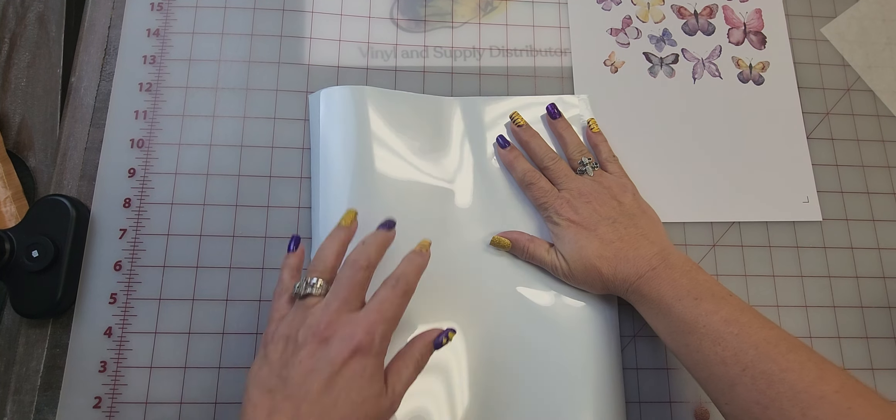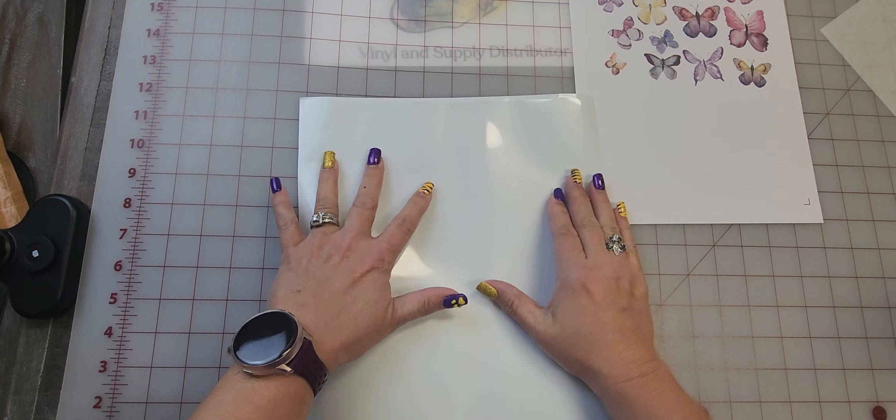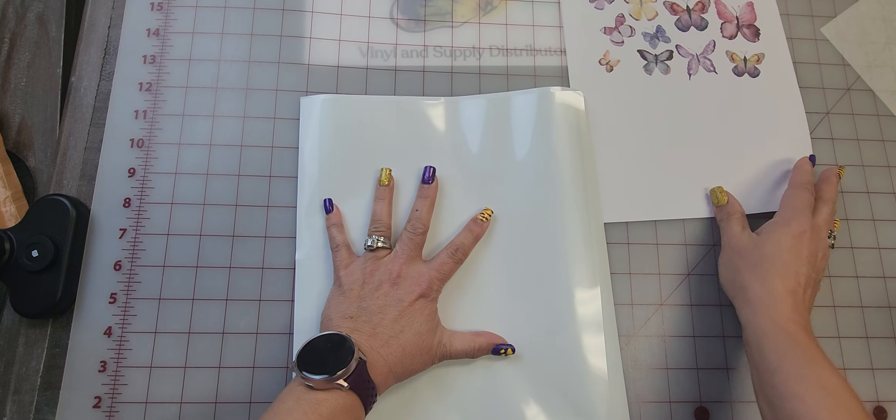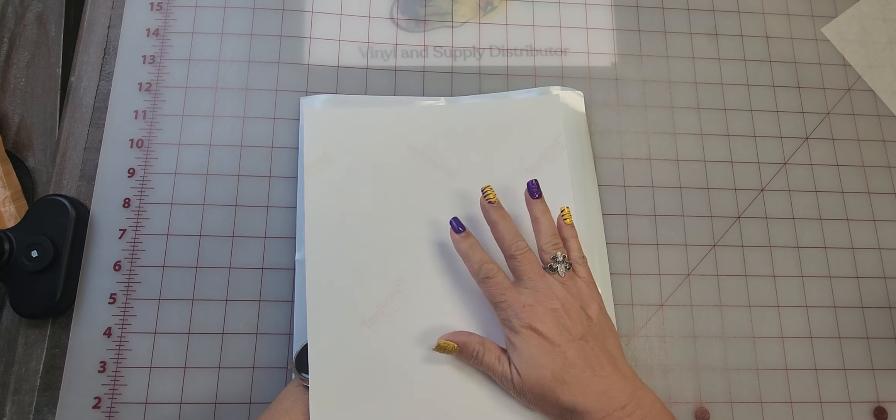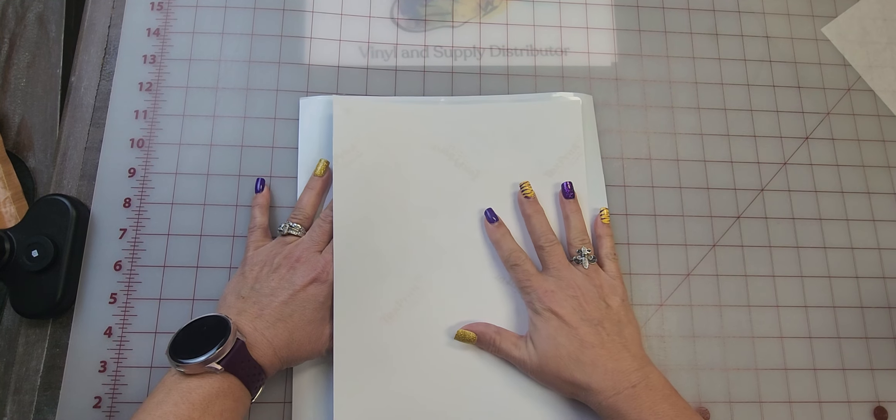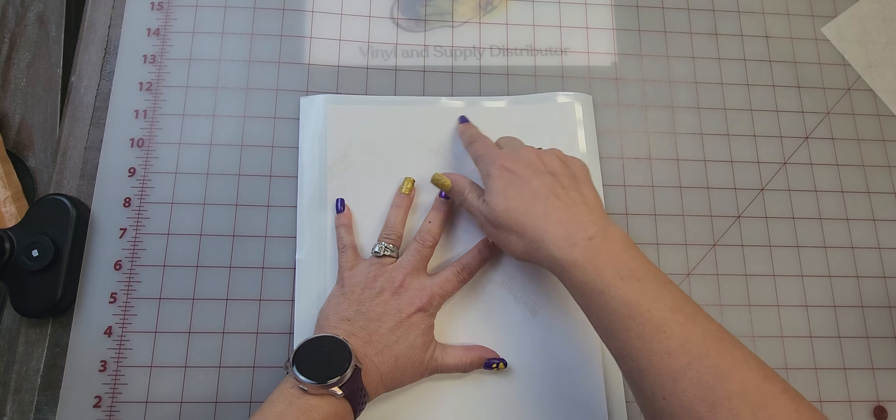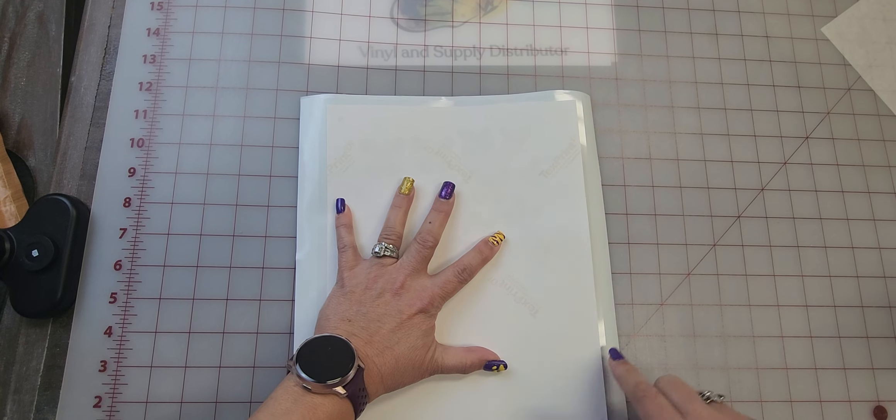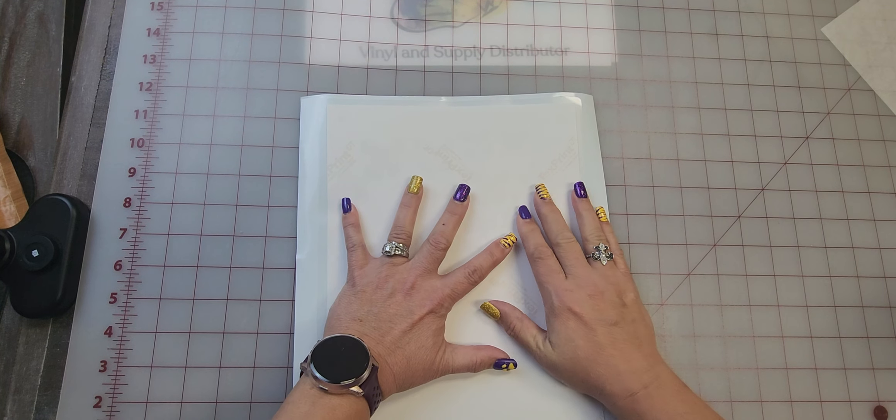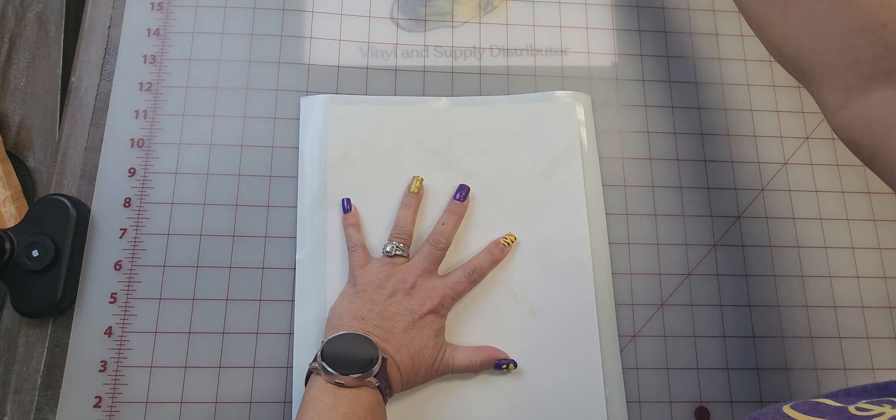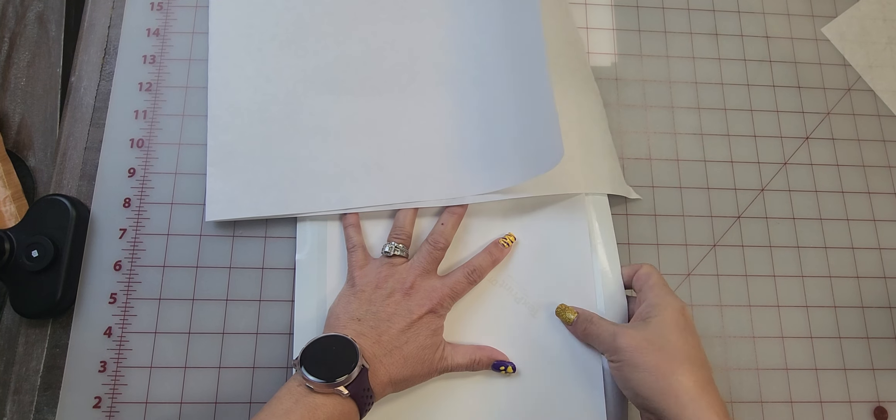And then I will put this face down. I need to make sure that my registration marks are on here. And now I am going to put it in a piece of butcher paper, very gently.